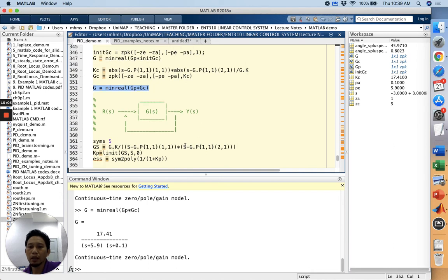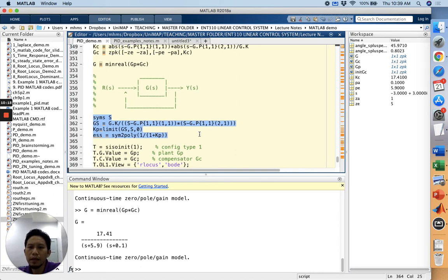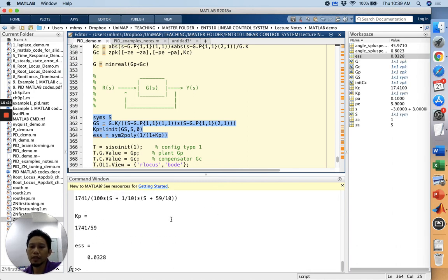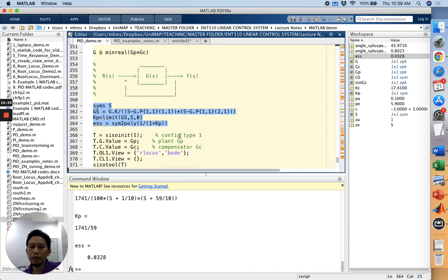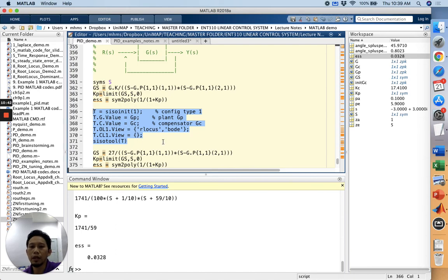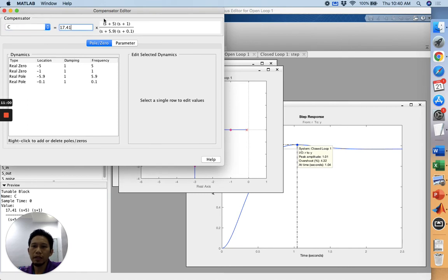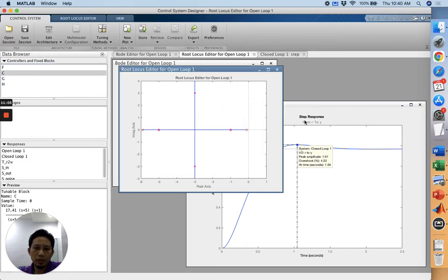Since we have our GC, we can find again the resultant value of GP multiplied by GC and we can find the KP and steady-state error using the limit final value theorem. We can do that in MATLAB using this code. What we get here is the steady-state error equals 3.28%. Then we input into the CISO tool the value of GP and GC. What we get is the initial value for the compensator: 17.41 is the KC and this is the GC we calculated before. We have the closed-loop transfer function.